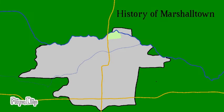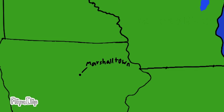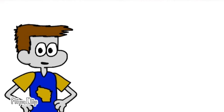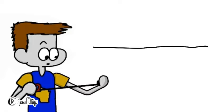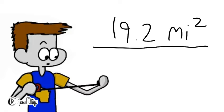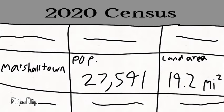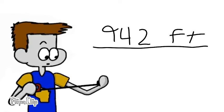Marshalltown is the county seat of Marshall County, Iowa, located in central Iowa along the Iowa River and is the 16th largest town in the state of Iowa, with a population of 27,591 at the time of the 2020 census. It has a total land area of 19.2 square miles and it sits 942 feet above sea level.